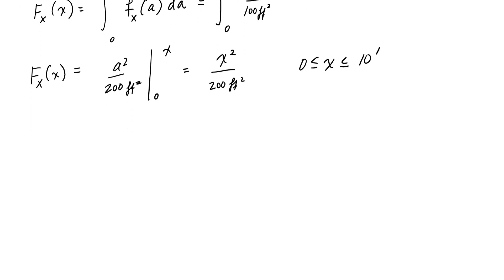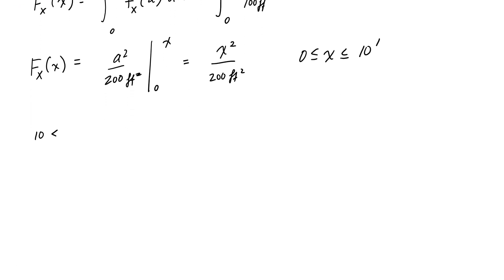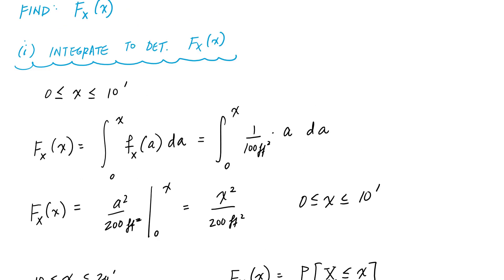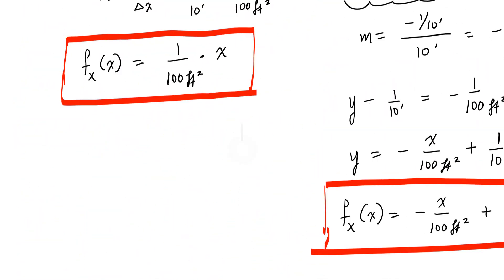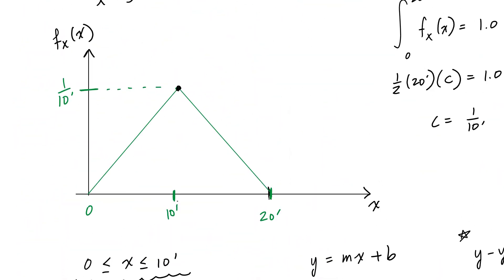And so now I'm going to do that for the second segment. So this is from 10 to 20 feet, and here the definition of the CDF is the probability of x less than or equal to x. So what we're doing, if I go back to this drawing up here, what I'm doing right now is like I'm looking for the CDF associated with this range of x between 10 and 20.